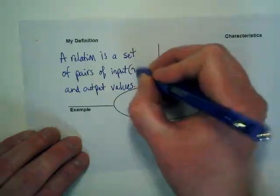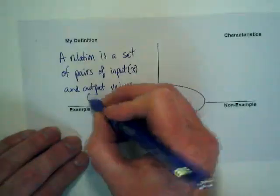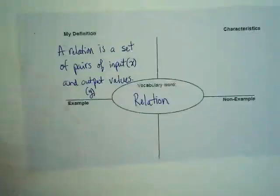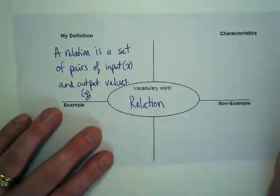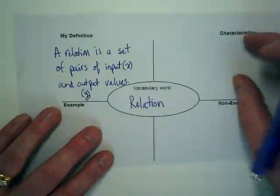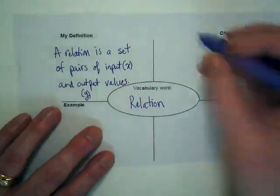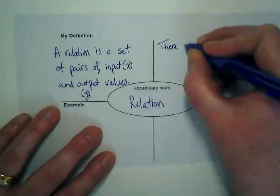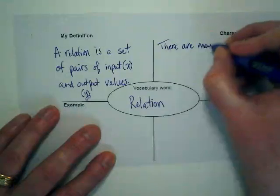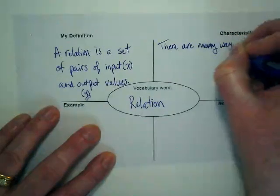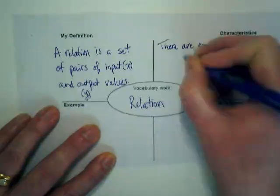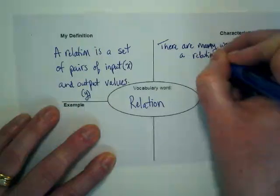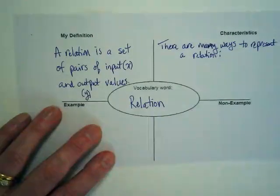Next to input on our notes, I want you to put X. And near the output, I want you to put Y. Characteristics. I often think that this is one of the two most important boxes on a frayer model. There are many ways to represent a relation, and we're going to make a list of some of those ways.